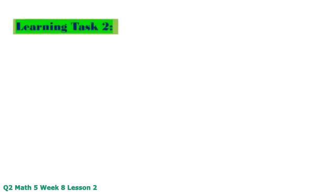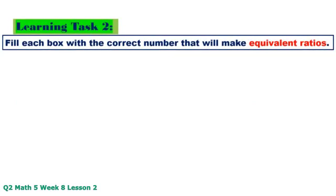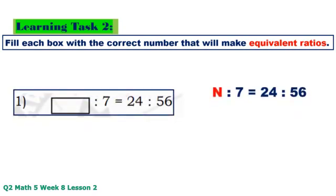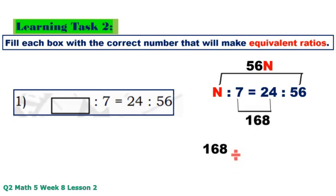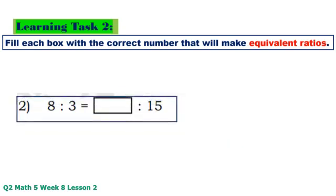Learning Task 2: Fill each box with the correct number that will make equivalent ratios. Number 1: N times 56 equals 56N, 7 times 24 equals 168. 168 divided by 56 equals 3.